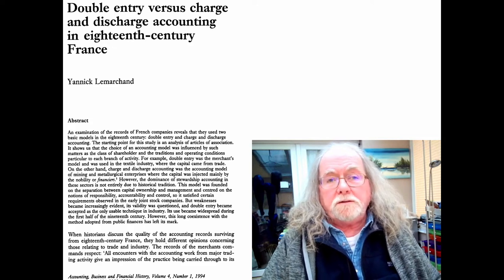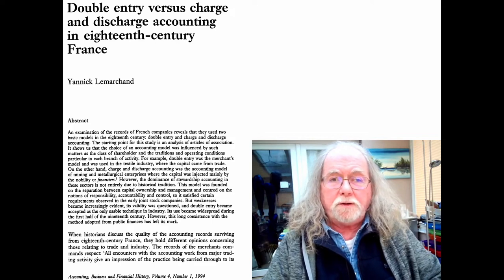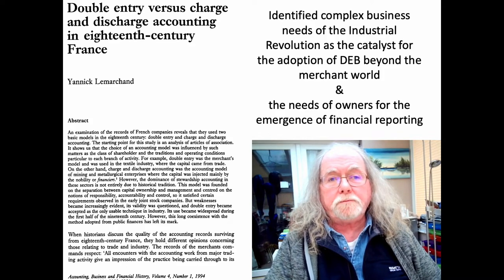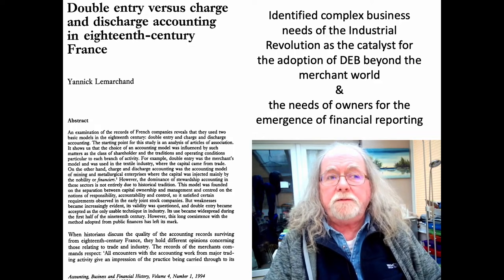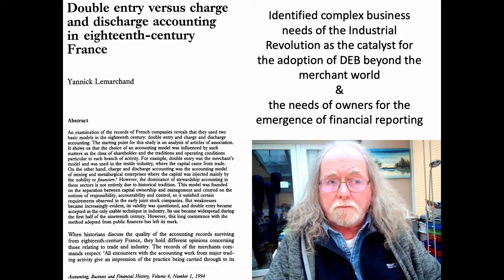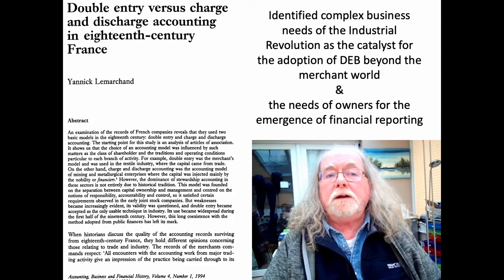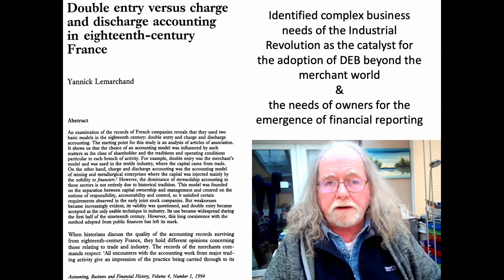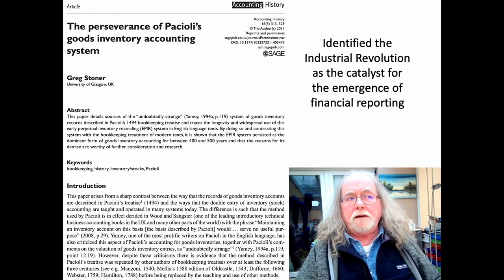There was also pressure from owners of the business — when they were represented by people who had invested in shares in the company — who wanted rather more than just what a trial balance contains. They wanted the detail you typically see in a balance sheet, and you learned about what sorts of things you'll see in a balance sheet when you read the second article. To sum up, what Le Marchand identified was that complex business needs of the industrial revolution were a catalyst for the adoption of double entry beyond the merchant world, and the needs of owners drove the emergence of financial reporting.